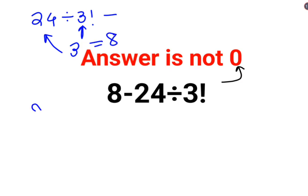And then when you have 8, minus again this division gets you an 8, so answer is supposed to be 0. That is wrong.